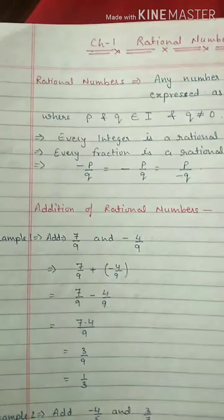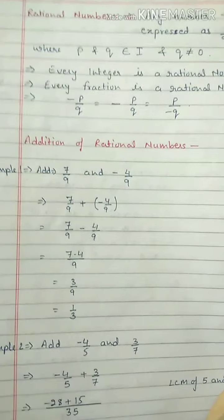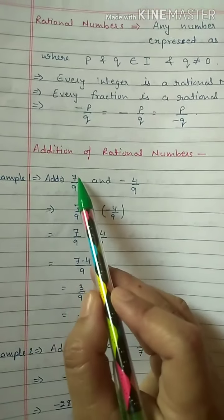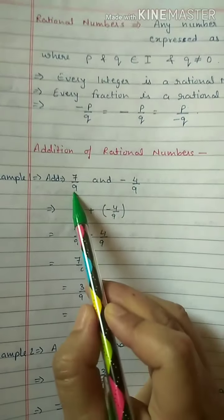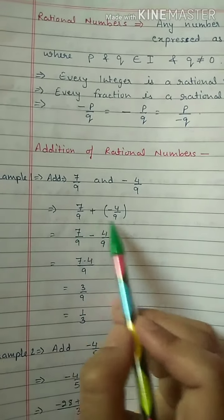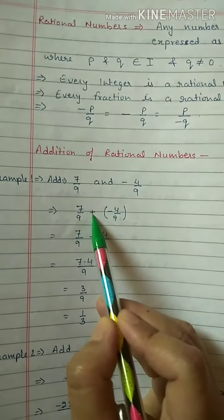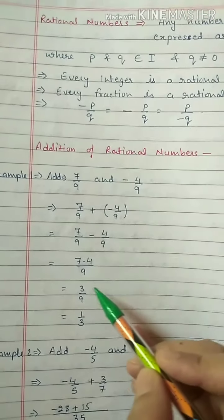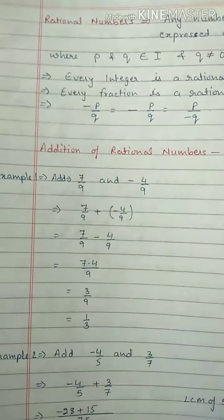Next is addition of rational numbers, which is very easy — it is like addition of fractions learned in lower classes. First example: add 7 by 9 and minus 4 by 9. Since the denominator is the same, directly add or subtract the numerators. Plus and minus becomes minus, so 7 minus 4 equals 3. Answer is 3 by 9, and after cancellation the answer is 1 by 3.